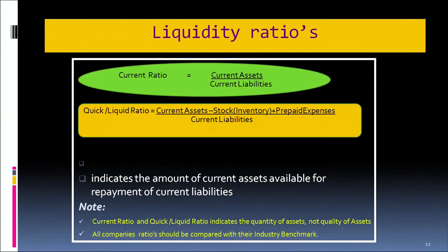Now let us talk about the second liquidity ratio — the quick ratio, also called the liquid ratio or acid test ratio. The quick ratio formula changes the numerator: instead of current assets, we use current assets minus inventories minus prepaid expenses, divided by current liabilities. This defines liquidity more directly than the current ratio, because we have deducted the slow-moving current assets — inventories and prepaid expenses.